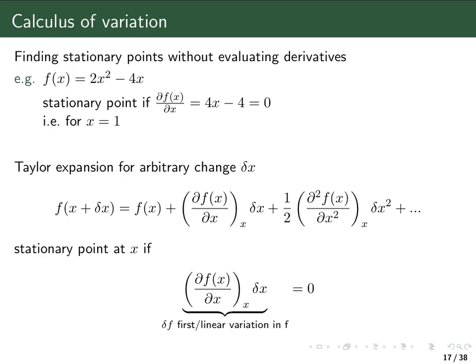We know that we have a stationary point if the value of the first derivative at that point is equal to 0. If this derivative is 0, then the whole term is 0 independent of the value of δx. So we have a stationary point if, for all values of δx, this first term in the Taylor expansion — which we call δf, the first or linear variation in f — is equal to 0.